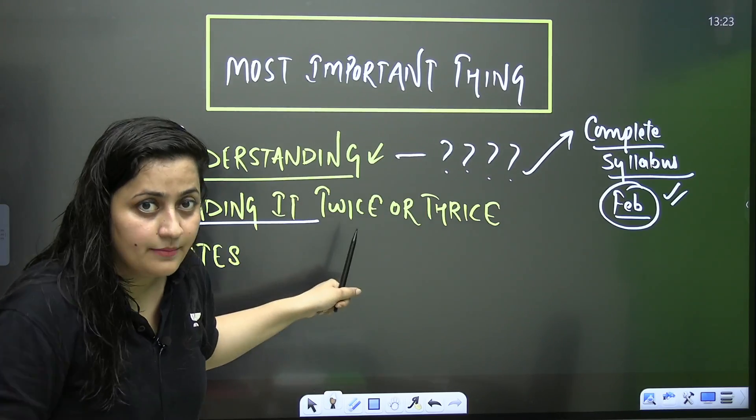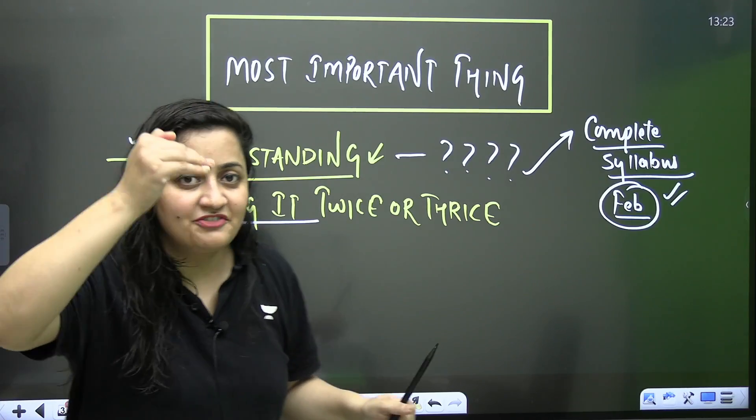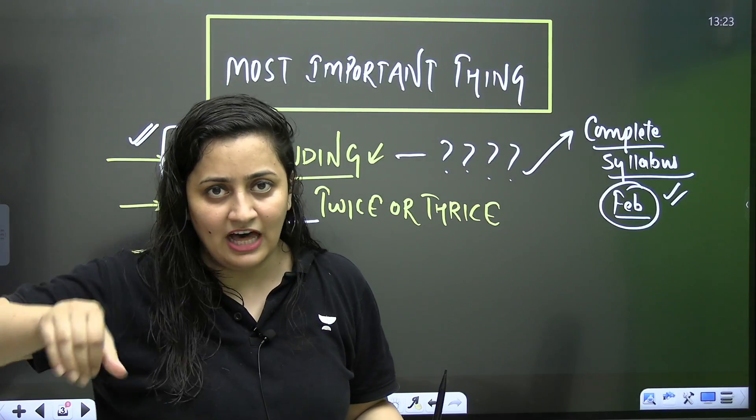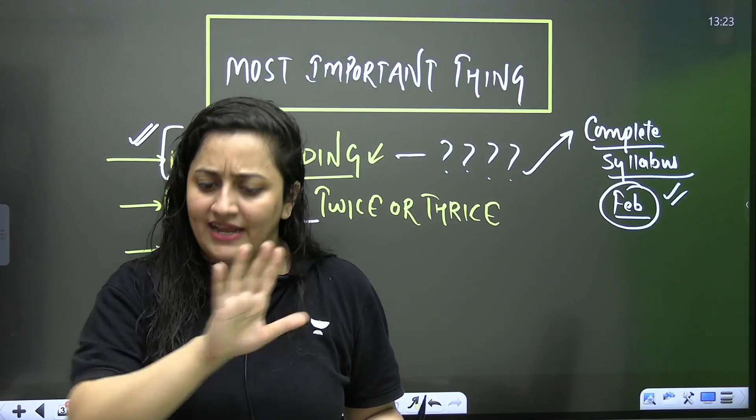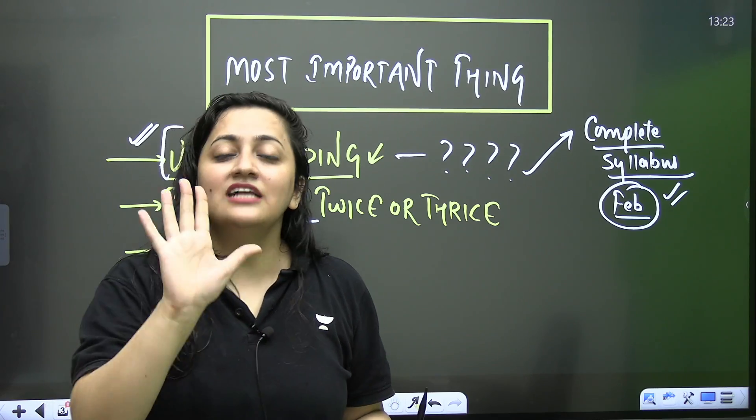And how? You have to understand your syllabus. There is no need to crash. So, after doing it, after attending lecture, after making notes, you have to read the NCRT twice or thrice, normally, thoroughly. That's what you have to do.